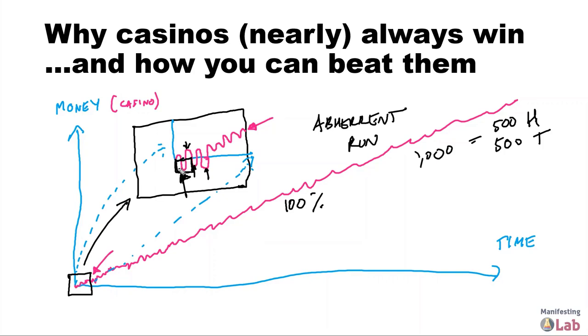So this little thing here, this house edge, is negated by the fact of this little box here. This is how you beat casinos. Now why on earth am I giving you a lecture in statistics and probability? What on earth has this got to do with manifesting and almost anything else? It's because not only does the casino have an edge, but ladies and gentlemen, you have an edge. The universe is skewed in your favor.